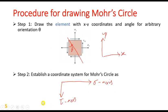Now the step-by-step procedure for drawing the Mohr circle. At step 1, draw the element with the x-y coordinate system and identify the given stresses sigma x, sigma y, and tau xy, with the arbitrary orientation angle theta of the inclined plane at which we need to determine the state of stress.